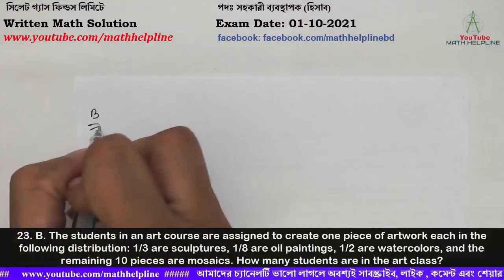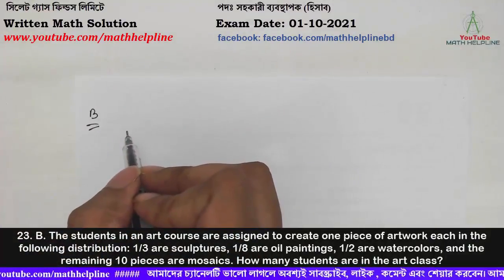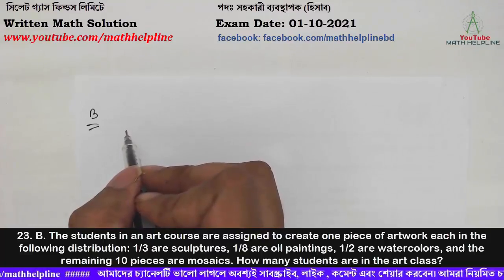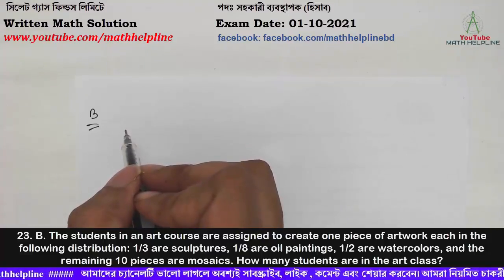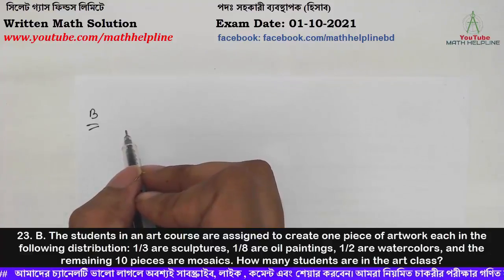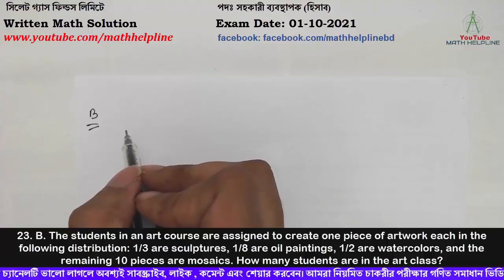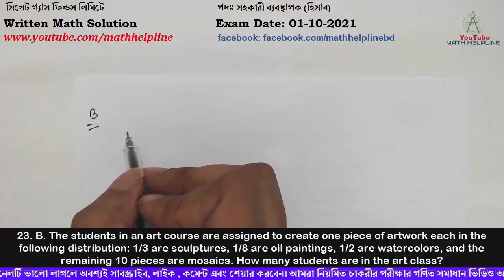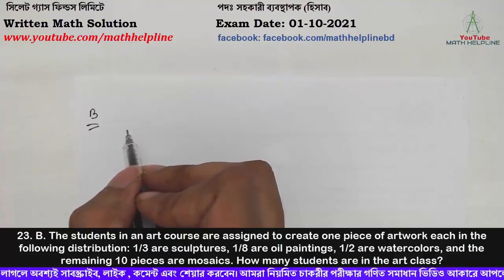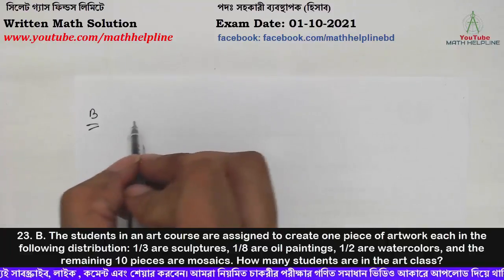Number two: Students in an art course are assigned to create one piece of artwork each in the following distribution. One third are sculptures, one eighth are oil paintings, half are watercolours, and the remaining ten pieces are mosaics. How many students are in the art class?